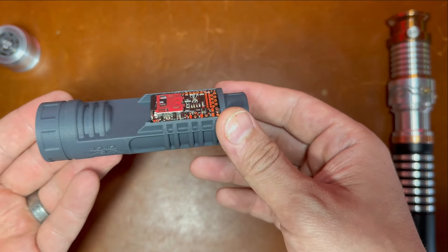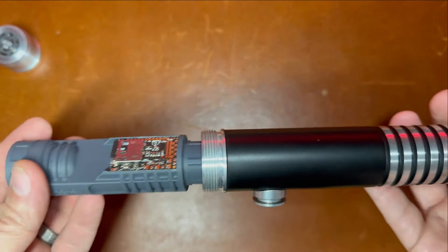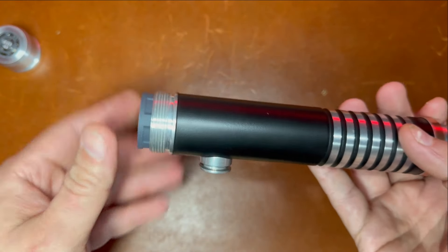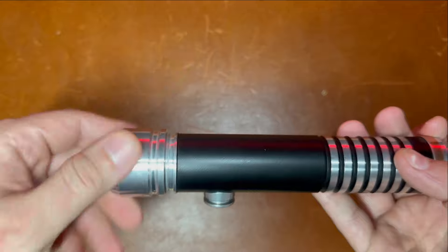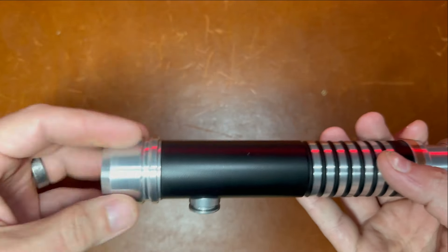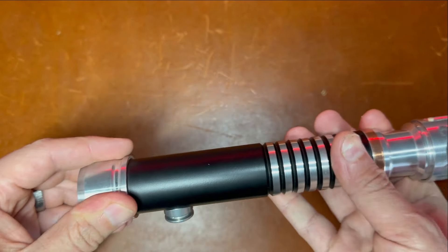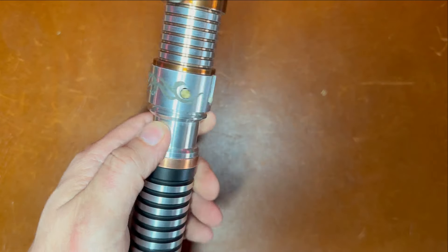This just has the stock font package on it for now. You just take this and put it into the saber, however you wish. Just throw it right in. And then take this guy and screw it on. When you lock the pommel all the way down, nice and tight, then you can come over here and hit power right here.